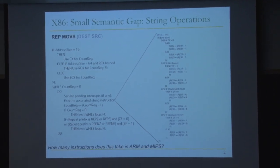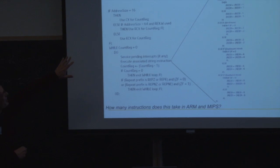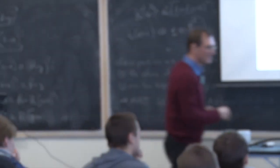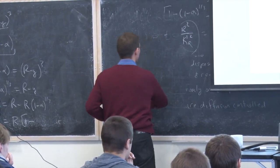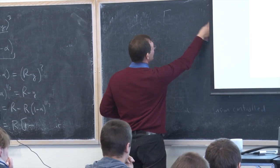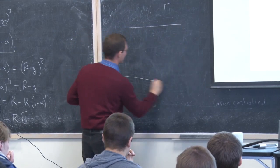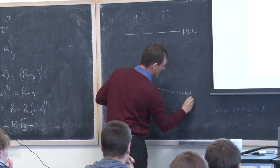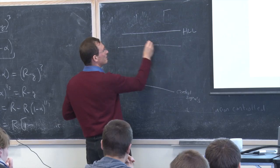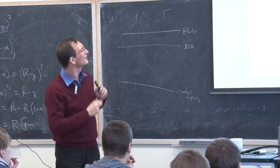This is where we left off. We were talking about complex versus simple instructions. We introduced the concept of the semantic gap, and this was an example I stopped at — a small semantic gap in x86. This was an example instruction from x86 that showed that you could copy one string to another with just a single instruction. The semantic gap was: where do you place the ISA? High-level language versus control signals. A small semantic gap means you have complex instructions. ISA is closer to the high-level language — you have a string copy instruction, for example. Repeat moves.